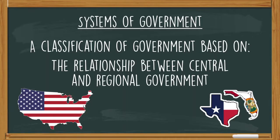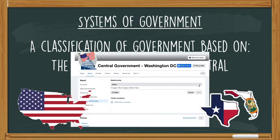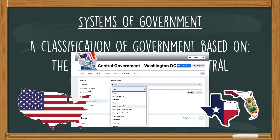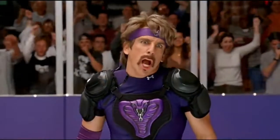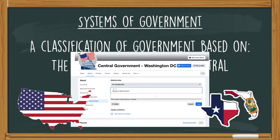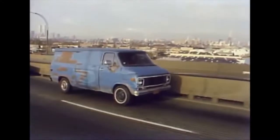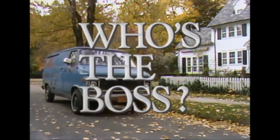Now that we know what a central and regional government is, we can begin to look at the relationship that these two governments can have in any country. And when we say relationship, we're not talking about who's dating who or who broke up with so-and-so. We're looking at these two governments and determining which one has authority over the other.